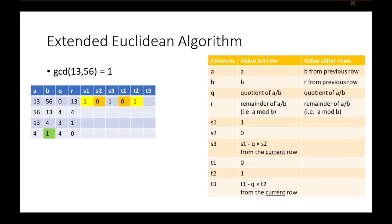Now we are going to calculate T3. T3 equals T1 minus Q times T2, which equals 0 minus 0 times 1, which equals 0. So the value of T3 on the first row of the table equals 0.